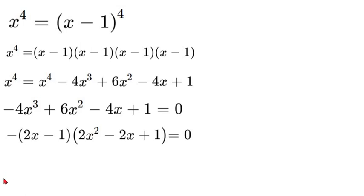Now in order to solve this, we can just set both sides equal to 0. So we would set our 2x minus 1 equal to 0 and our 2x squared minus 2x plus 1 equal to 0.